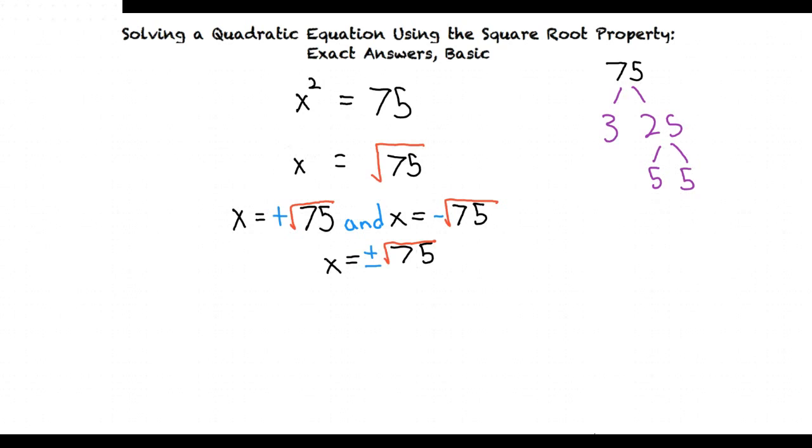Rewrite the answer as x equals plus or minus square root of 3 times 5 times 5. As we can see, there are two fives in our square root. So we just take out a 5 to get x equals plus or minus 5 square root of 3.